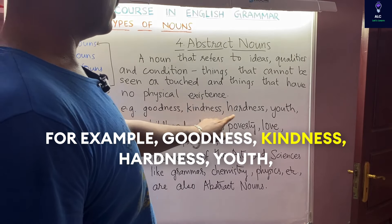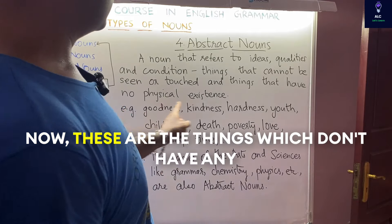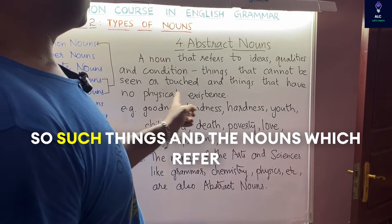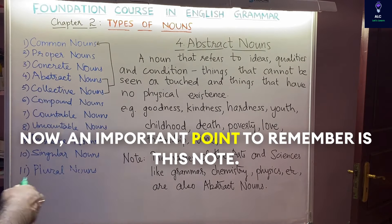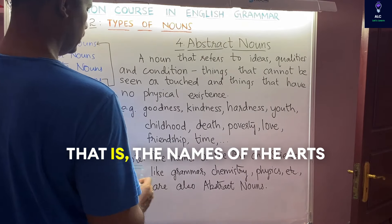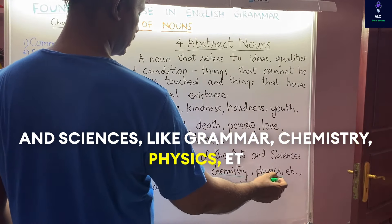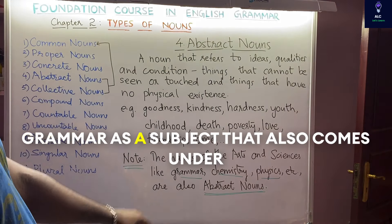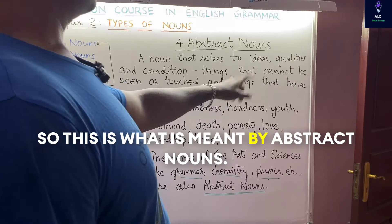For example: goodness, kindness, hardness, youth, childhood, death, poverty, love, friendship, time. These are things which do not have any physical existence and cannot be seen or touched. Such nouns are called abstract nouns. Note that the names of arts and sciences like grammar, chemistry, physics, etc. are also abstract nouns, because they do not have physical existence and cannot be seen or touched.